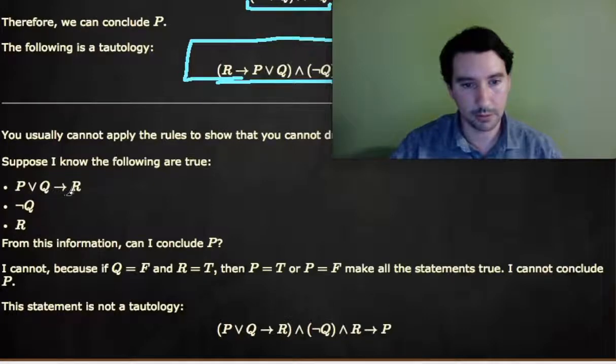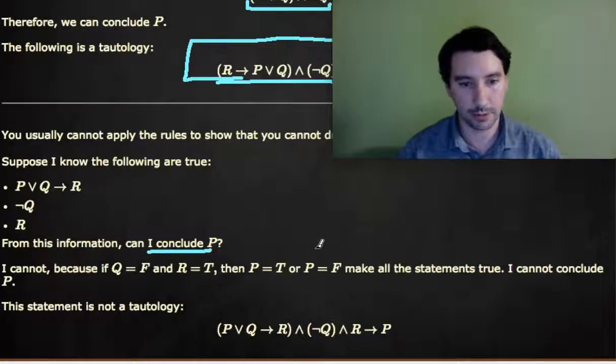So say I have P or Q implies R, I know not Q, and I know R, can I conclude P? And it turns out you can't, but you could try to make arguments all day and you'll never get to P, but that doesn't show that somehow you can't ever get to P, because you might deduce more and more statements.